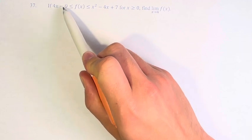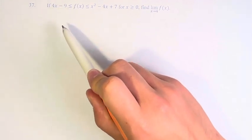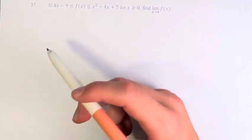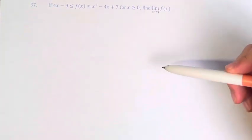In this problem we're asked if 4x minus 9 is less than or equal to f(x) is less than or equal to x squared minus 4x plus 7, for x is greater than or equal to 0, to find the limit as x approaches 4 of f(x).